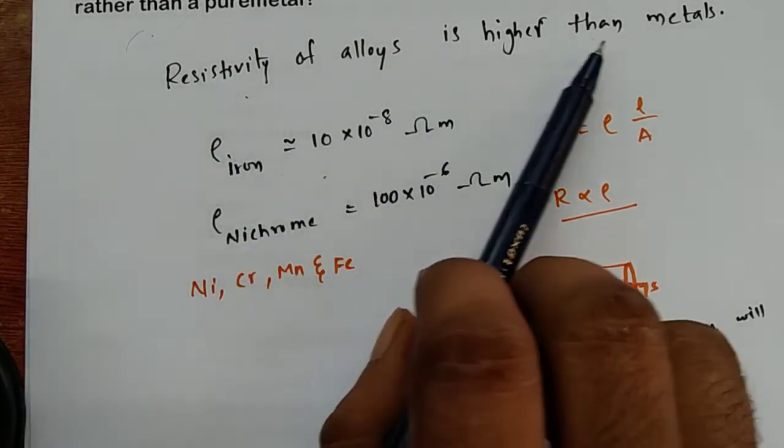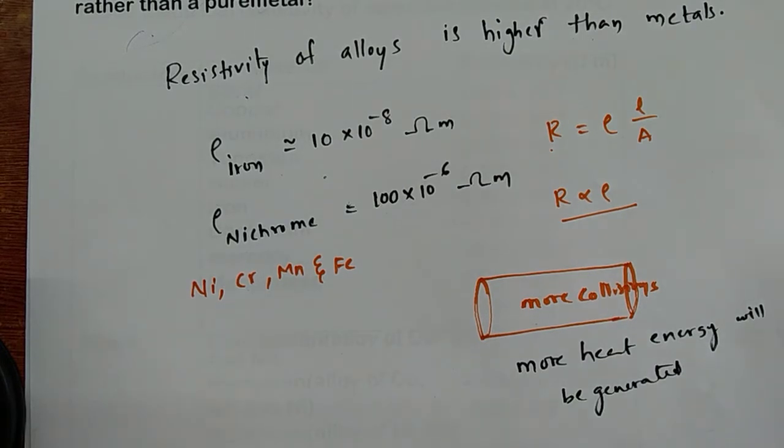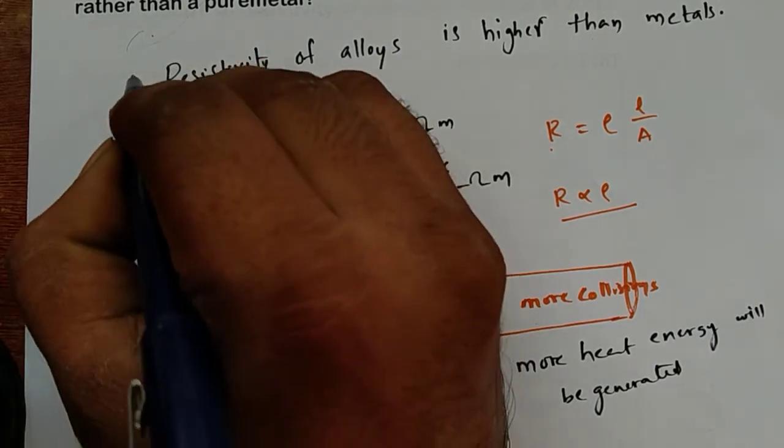The resistivity of alloys is higher than metals, so we can increase the resistance and use the heat generated for cooking purposes. This is the first reason.